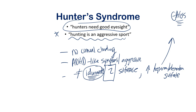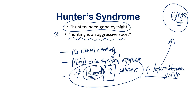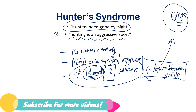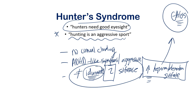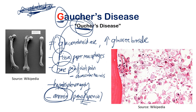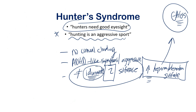When iduronate-2-sulfatase isn't working, you get a buildup of heparan sulfate and dermatan sulfate in the lysosomes — both are glycosaminoglycans. They could ask what class of molecule is building up, and the answer is glycosaminoglycans, which are complex carbohydrates. It's important to research what each specific molecule is so you can answer different question formats on exams.